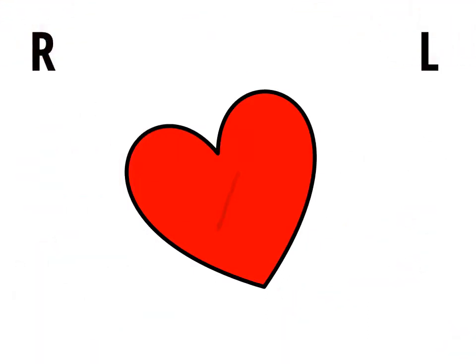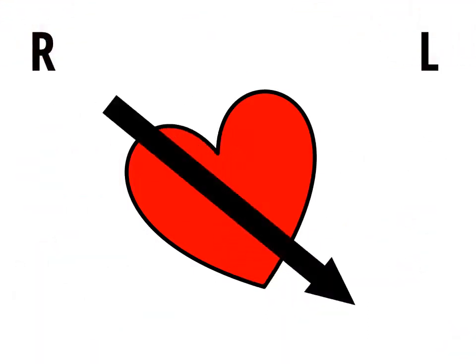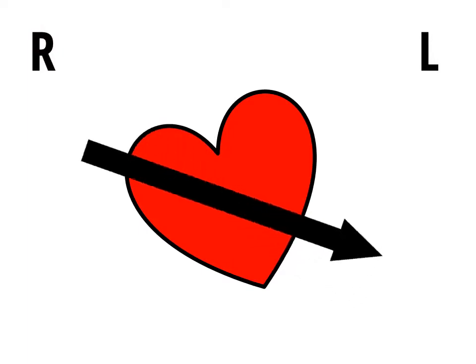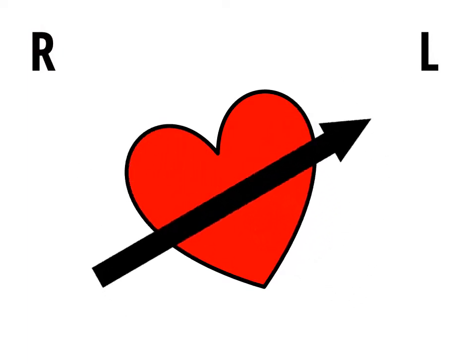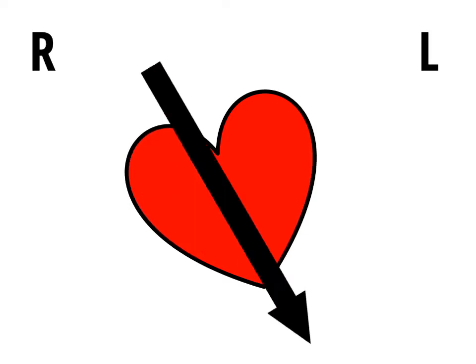The cardiac axis is the overall direction of ventricular depolarisation. Sometimes the axis is normal, too far to the left, or too far to the right.